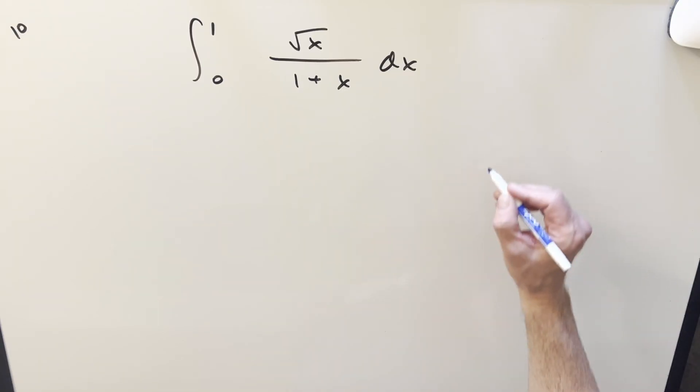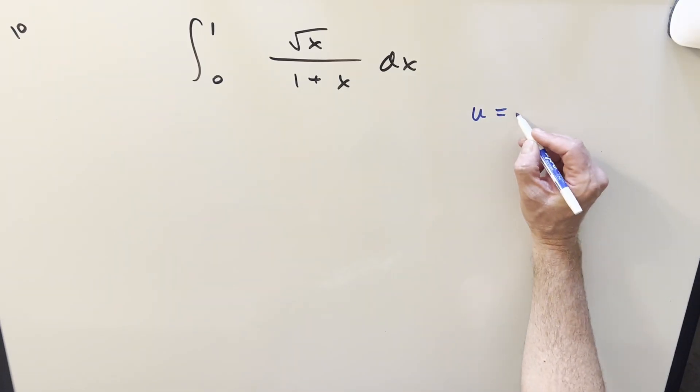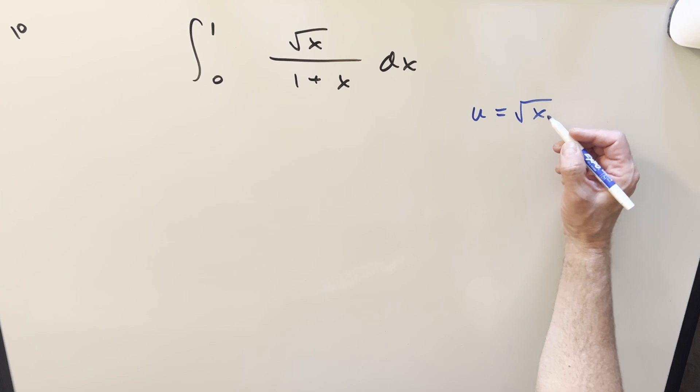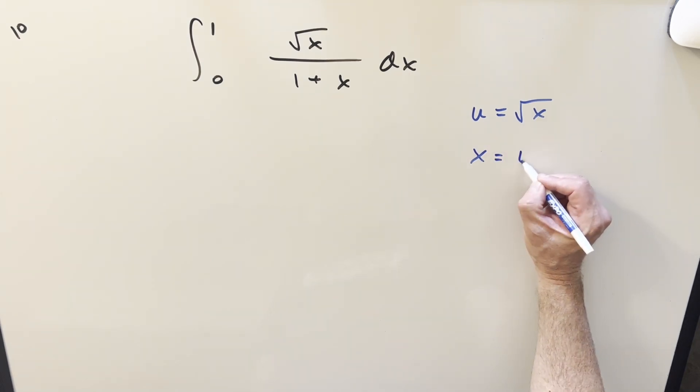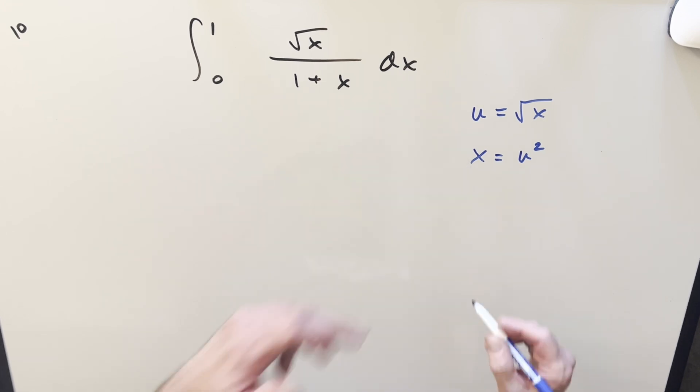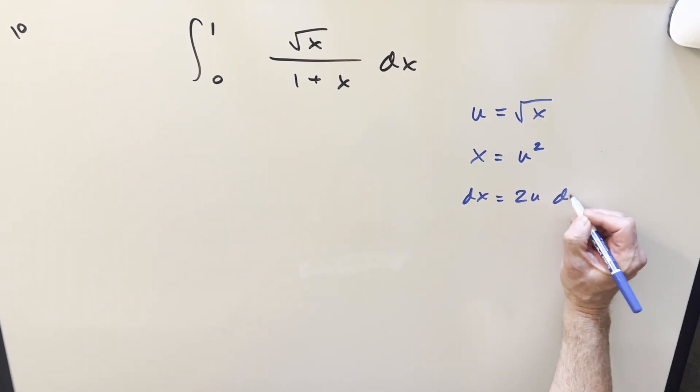For my first method, I want to do the straightforward thing and just do a u substitution. Later on, the second method is a little less conventional. Substitute u for square root of x. I think I'll solve for x and do it that way. You could just take a derivative on the u too, it's not really going to matter very much. So isolating our x,